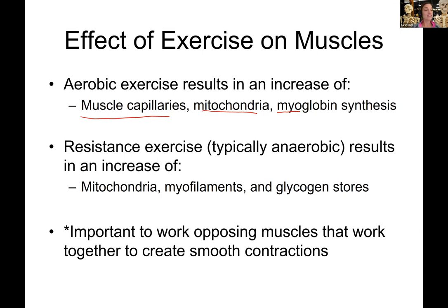If you're doing resistance activities like lifting weights — which are usually anaerobic — you'll see more mitochondria in your muscles. Your muscle cells get bigger because you get more myofilaments, meaning more actin and myosin. You'll also store more glycogen, which makes sense because in anaerobic respiration you only get two ATPs per glucose, so you need to store more glucose in your muscles.